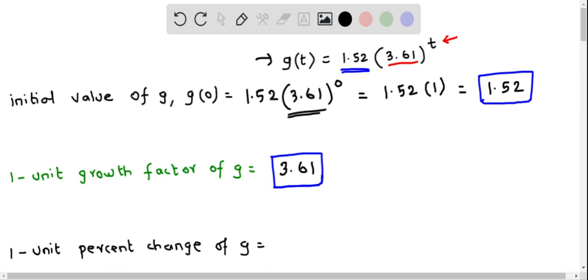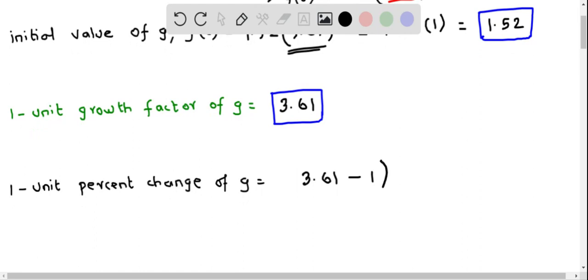Now let us calculate the one-unit percent change of g. For this I am going to consider the one-unit growth factor which is 3.61 and then subtract one from this one-unit growth factor, and this quantity multiplied by 100 gives the one-unit percent change. So this gives 3.61 minus 1 is 2.61, and when we multiply with 100 we get 2.61 times 100 is 261. Therefore this is in percent. So we say that one-unit percent change of g is 261 percent.